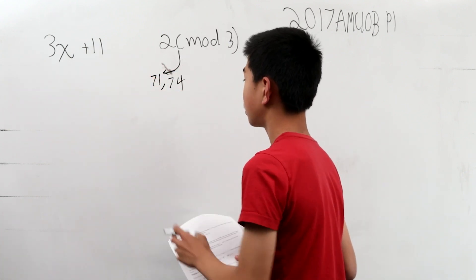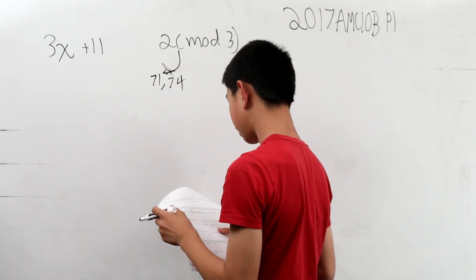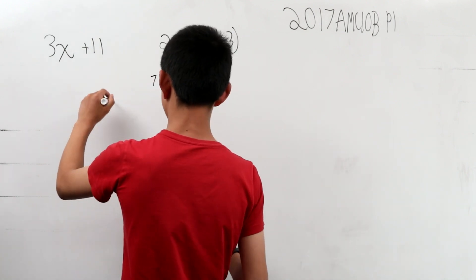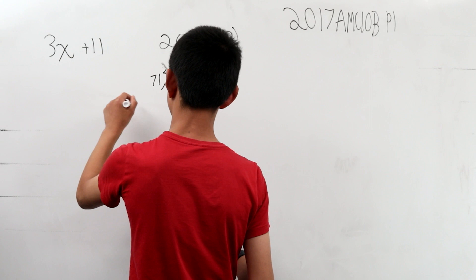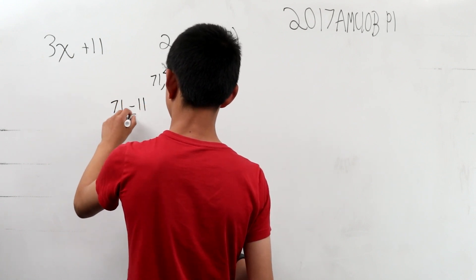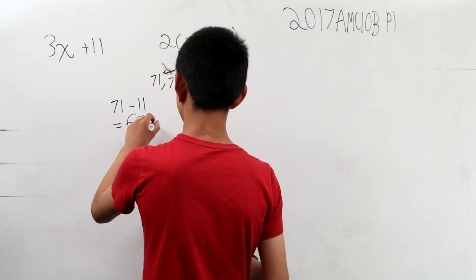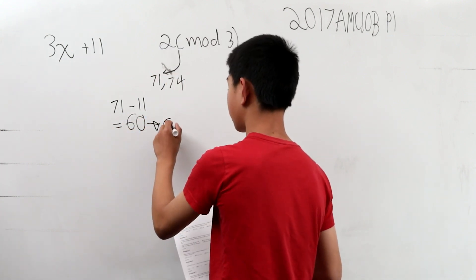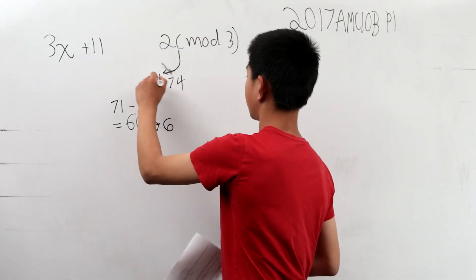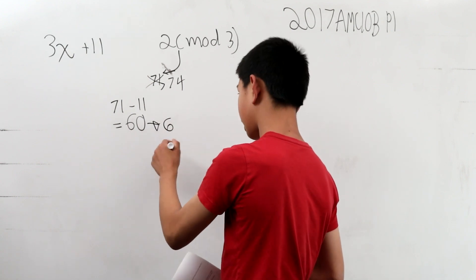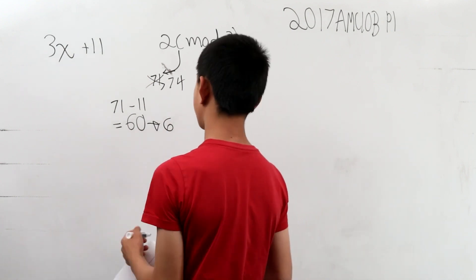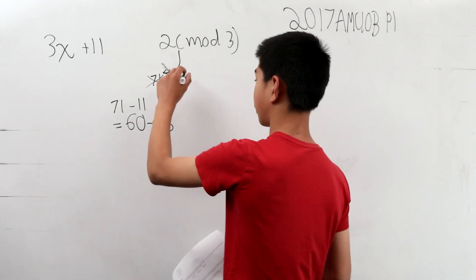When we test the number 71, 71 minus 11 is 60. And then you switch the digits, which is going to be 6, and this is not going to work because when you divide 6 by 3, our number is going to be 2, which is not a two-digit number. So therefore, it's got to be 74.